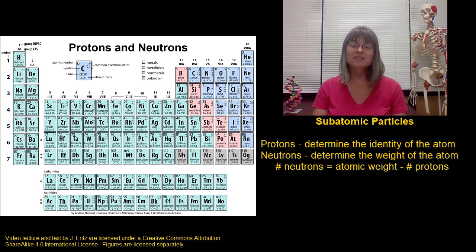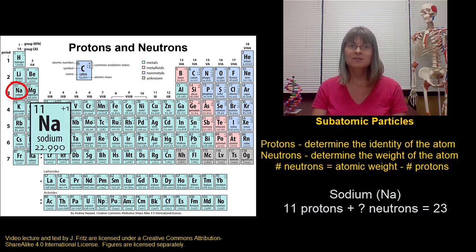Let's look at another example. Let's look at sodium. Sodium has an atomic number of 11, so we know that it has 11 protons. The atomic mass of sodium, if we round to the nearest whole number, is 23. If we have a total mass of 23 and we have 11 protons, that means we must have 12 neutrons.